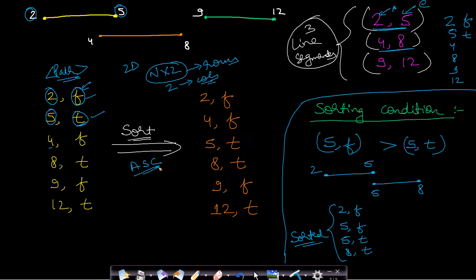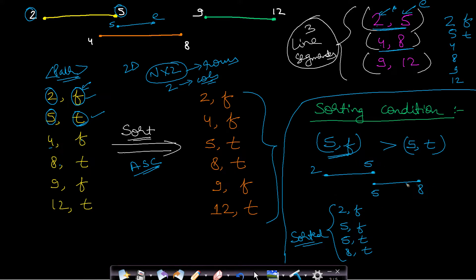After writing all points, we sort them in ascending order. There is a sorting condition: if two values are equal — for example, one line segment ends at 5 and another starts at 5 — then the starting point gets higher priority. So in sorting, 5F will come before 5T. This is the equality condition for sorting.